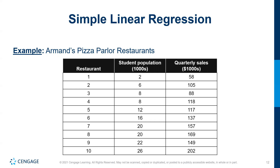We can see some exceptions — one restaurant has less sales than others, and two restaurants with around 8,000 students have noticeably different sales. So the relationship isn't perfect, but the general trend is there.